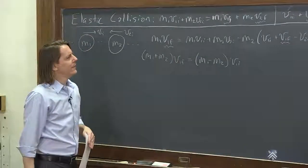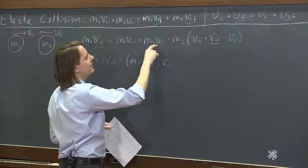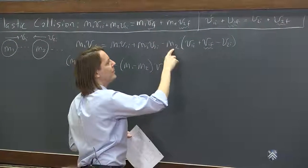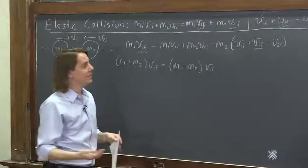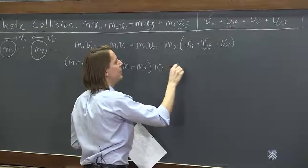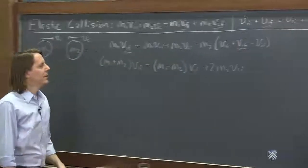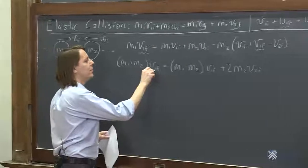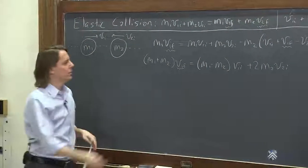And then what else do we have? We have the V2i's here. So we have M2 V2i minus M2 minus V2i. So those two minuses become a plus, and you get a two. Interesting, plus two M2 V2i. All right, so now we're going to solve for the thing we're looking for, V1f. We're just going to bring the M1 plus M2 under the bottom.